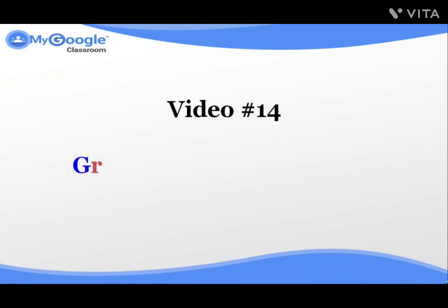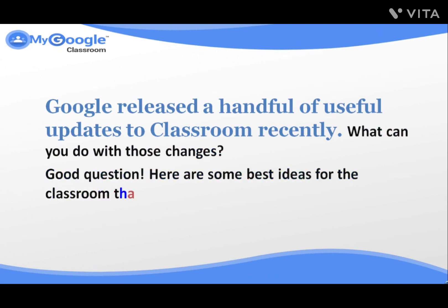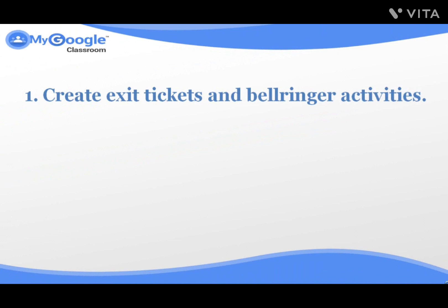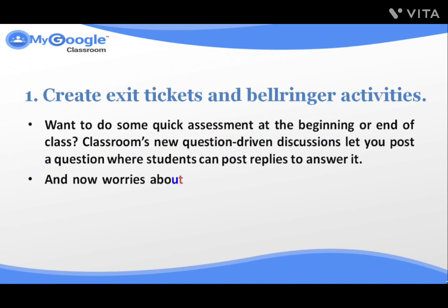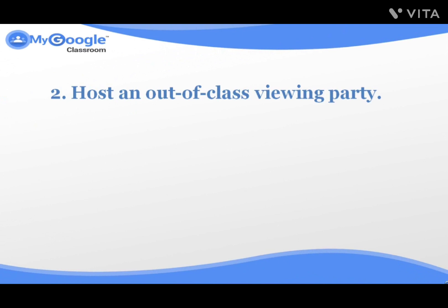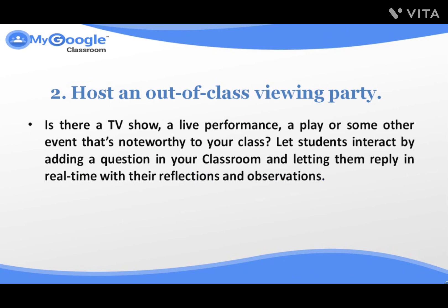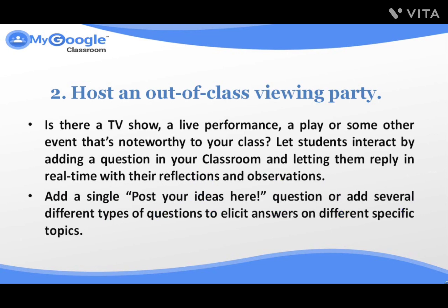My Google Classroom, Video Number fourteen: Great Ways to Start Using Google Classroom Now. Google released a handful of useful updates to Classroom recently. Here are some best ideas for Classroom that these changes have made possible. Number one: Create exit tickets and bell ringer activities. Want to do some quick assessment at the beginning or end of class? Classroom's discussion feature lets you post a question where students can post replies to answer it — and no worries about students copying since you can choose the option to monitor it. Number two: Host an out-of-class viewing party. Is there a TV show, a live performance, a play, or some other noteworthy event? Let students interact by adding a question in your classroom and letting them reply in real time with their reflections and observations.